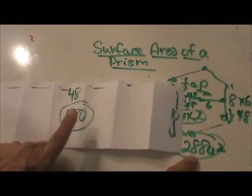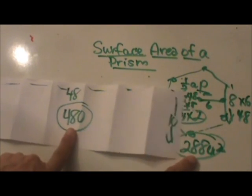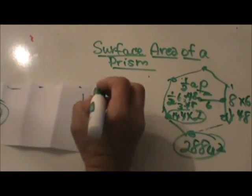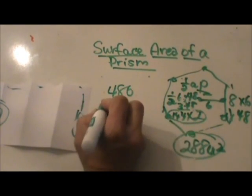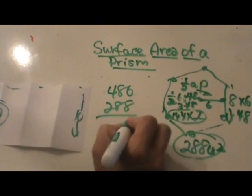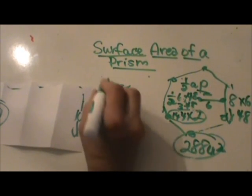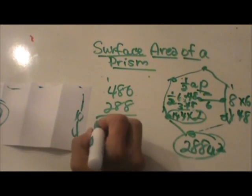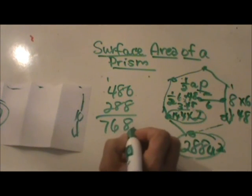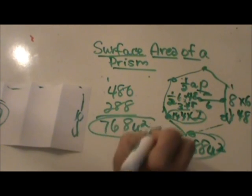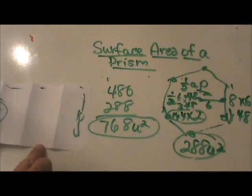Now the last thing I have to do is take my lateral area and I am going to add my base areas, put them together. So 480 plus 288, 8, 16, carry the 1, 768 square units, and that is how you find the surface area of this prism.